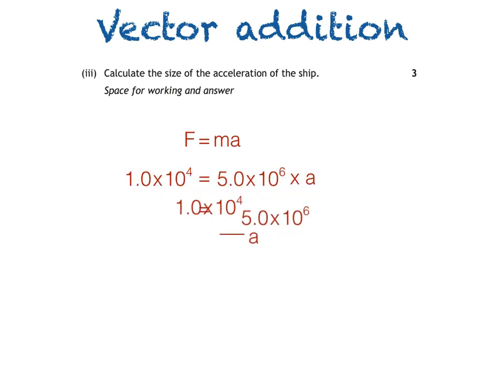We can then rearrange the equation to give us acceleration a by dividing both sides by 5.0 × 10⁶. This gives us an acceleration of 2.0 × 10⁻³ m/s². You can see that I've written the answer with the same number of significant figures as given in the question. I'll talk more about this in another video.